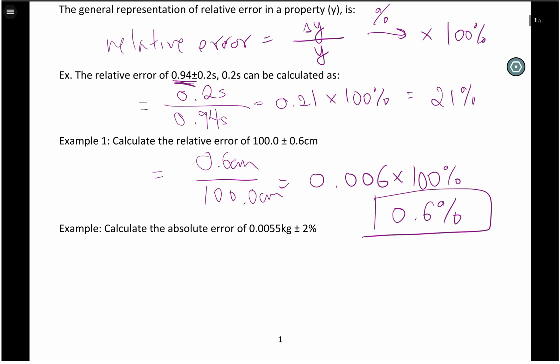The next example, example two, we're going to calculate the absolute error. So note, we're calculating the absolute error of 0.0055 kilograms. This is the opposite of taking a relative error. Instead of dividing our absolute error by our actual value, we are going to multiply our actual value by our relative error,